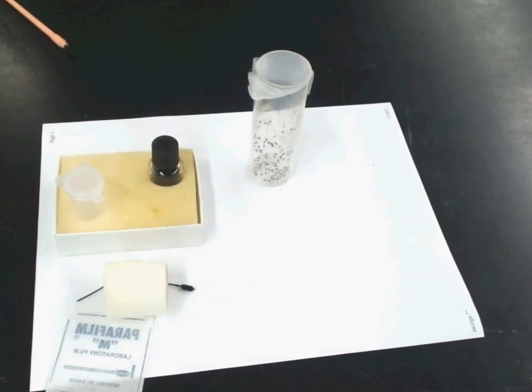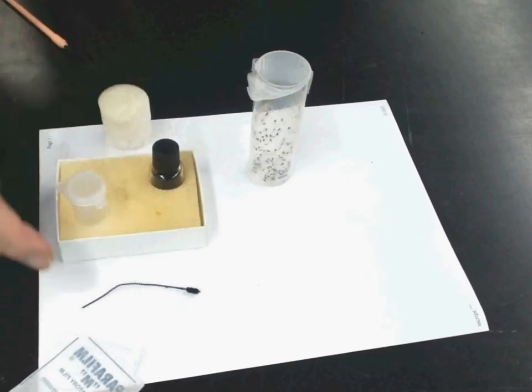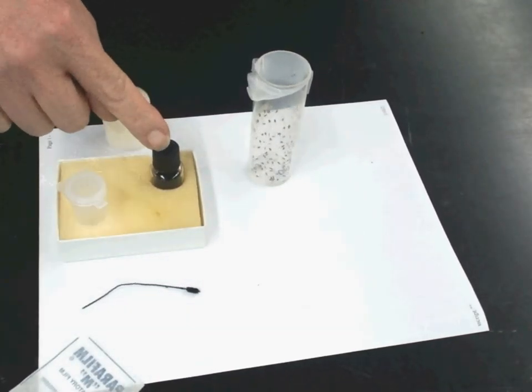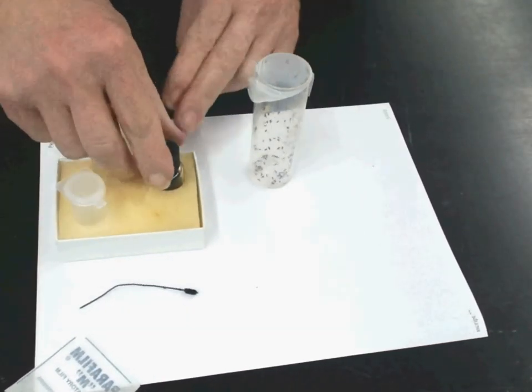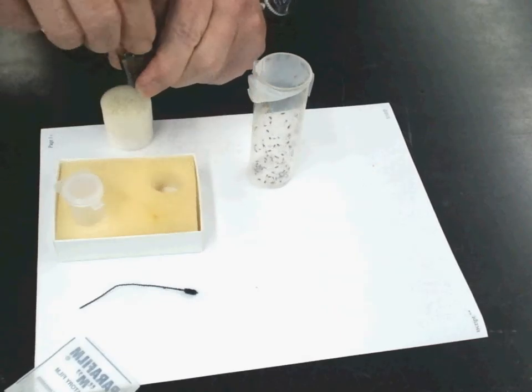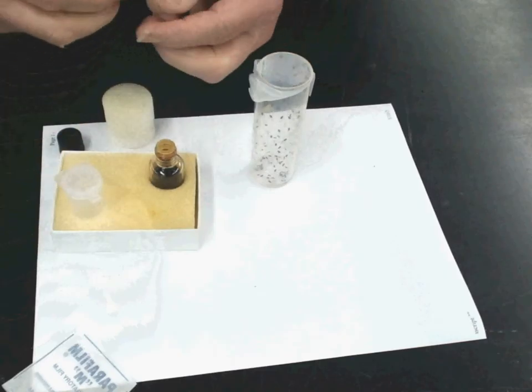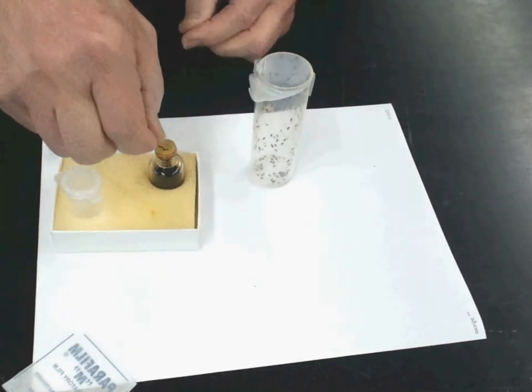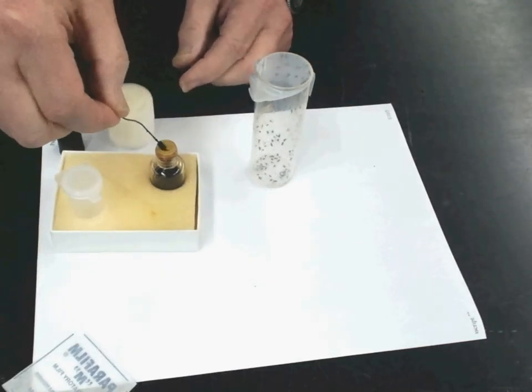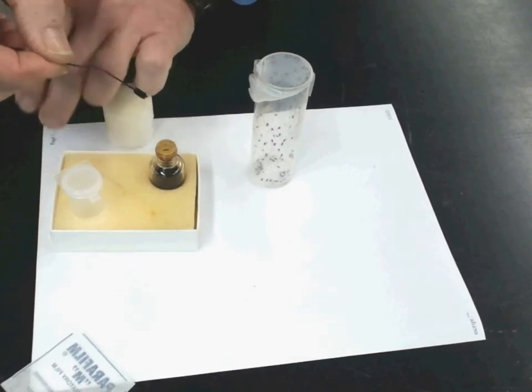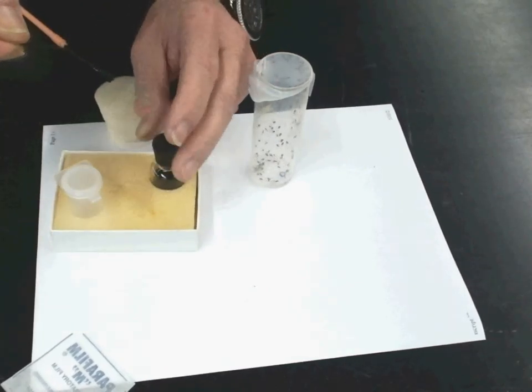Now you're going to want to load the wand with the anesthetization fluid. Open the fluid up and dip the wand in. Just one dip, not too much on there. Close it up because the stuff has a smell.